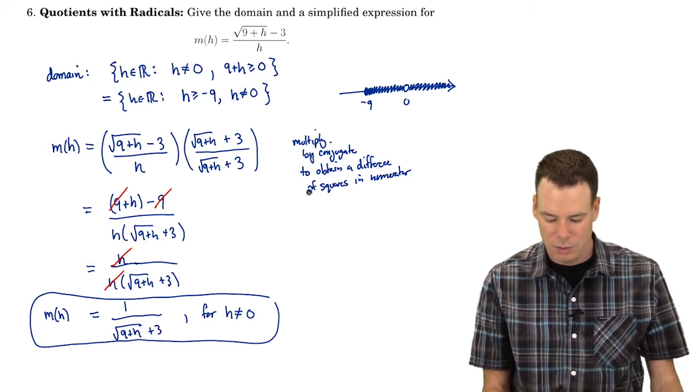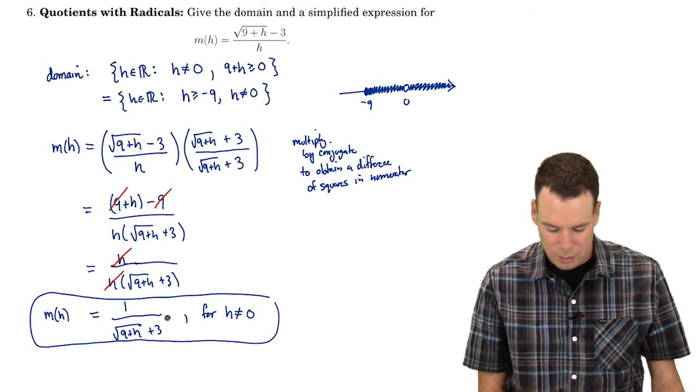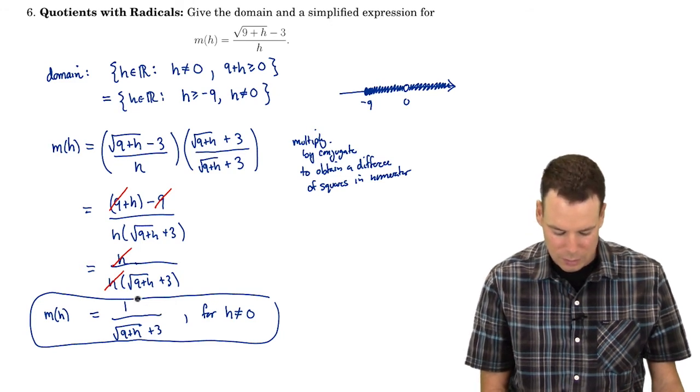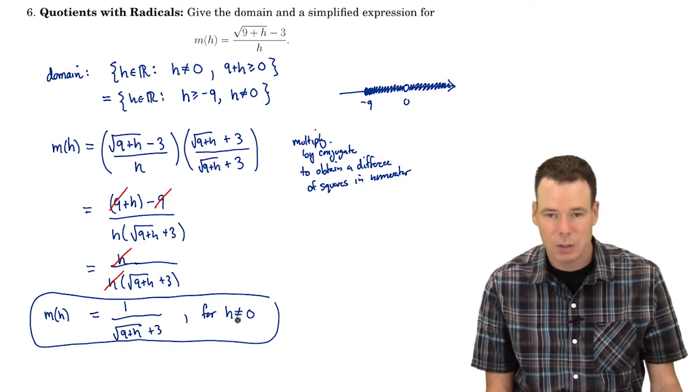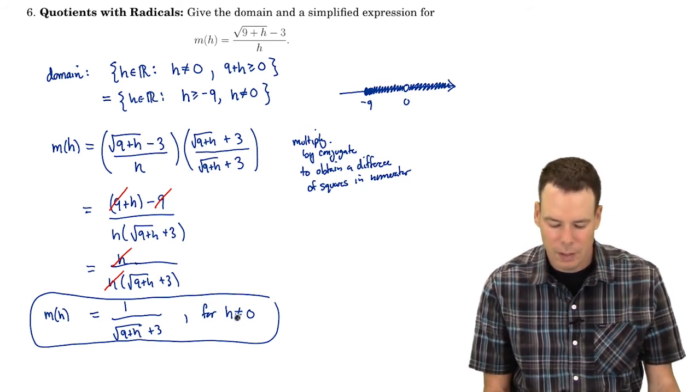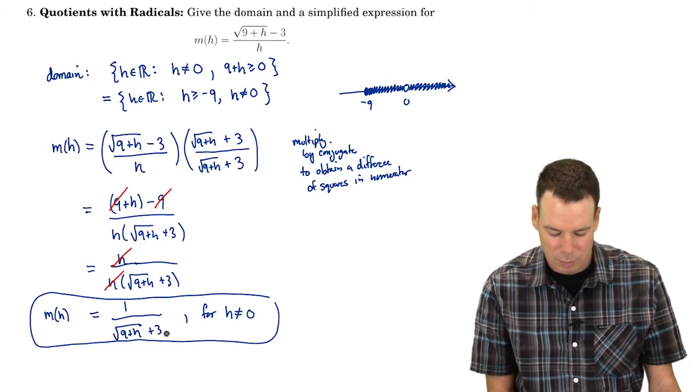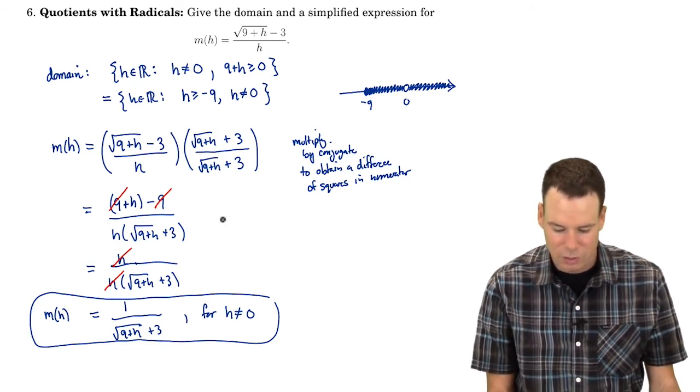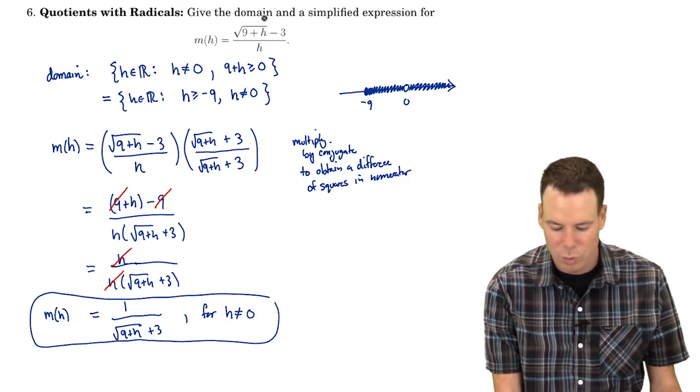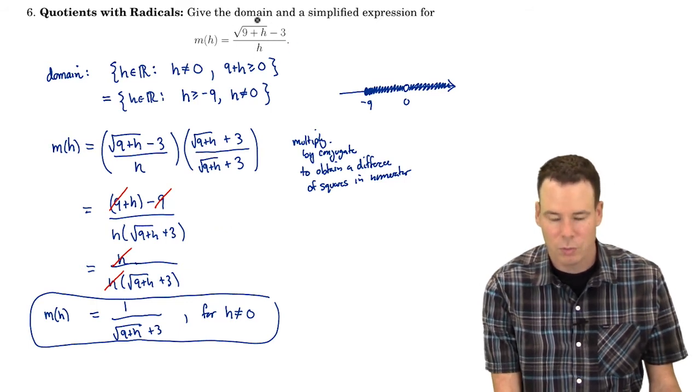And those questions are easily answered with this simplified expression because this expression agrees everywhere with my original one except at zero. At zero my original one's not defined but at zero this one is. So if I plug a zero into this expression that tells me what the behavior of the points we're doing on this function around zero.